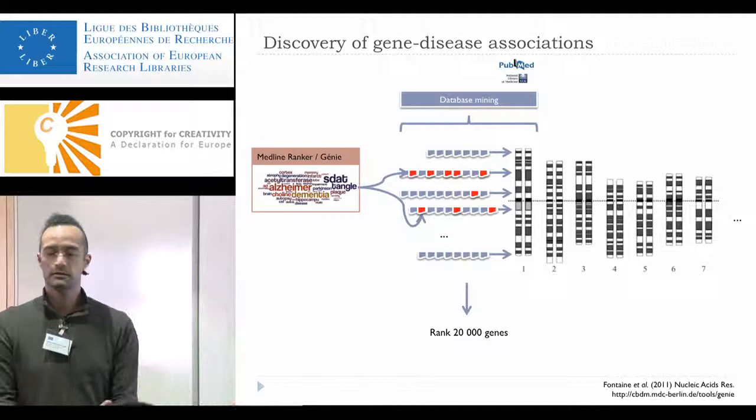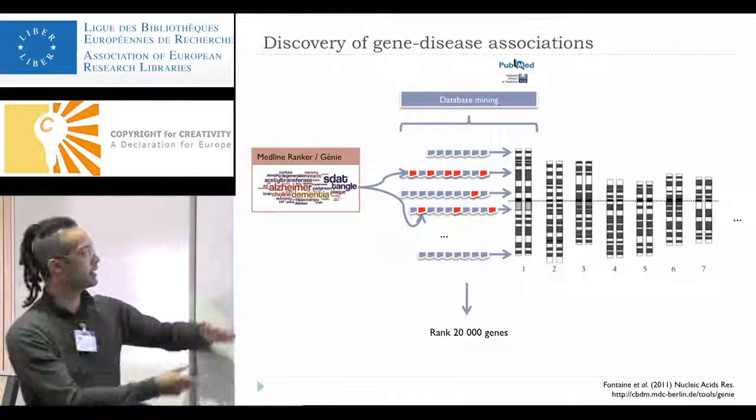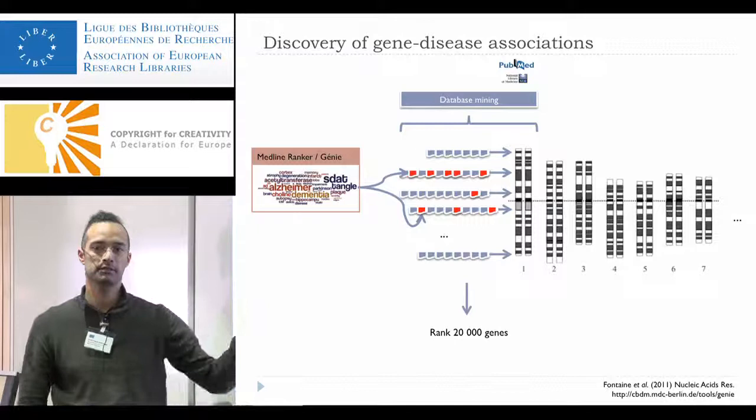First you get what is known. But even if I remove the Alzheimer term, I would still get a good score for some articles. You also get predictions. And this is the idea: you can really discover genes that are involved in a disease but not yet known.